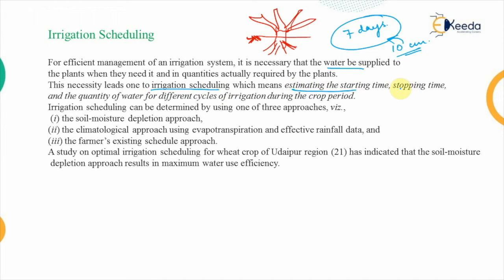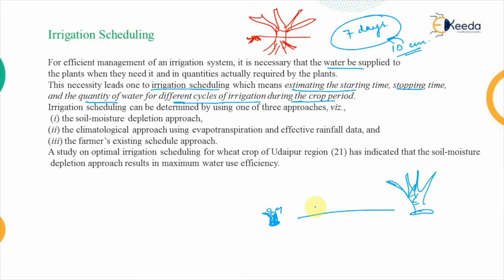Irrigation scheduling estimates the starting time, stopping time, and quantity of water for different cycles of irrigation during the crop period. The crop period spans from when the seed is sown to when the crop is fully matured. During that entire period, the actual amount of water required is classified and scheduled under irrigation scheduling. This can be determined using one of three approaches.